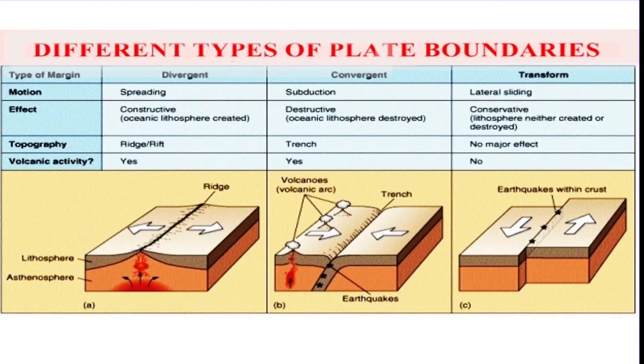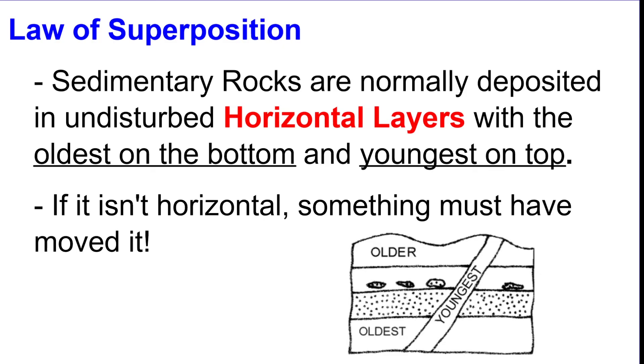Here's a little cheat sheet for you that goes over the three boundaries. You can see the arrows and it shows what is created at each one. If you want to pause this, you can and just look at this. Next is the law of superposition. The only thing to know about the law of superposition is that the oldest layer of rock is always on the bottom and the youngest layer of rock is always towards the top.